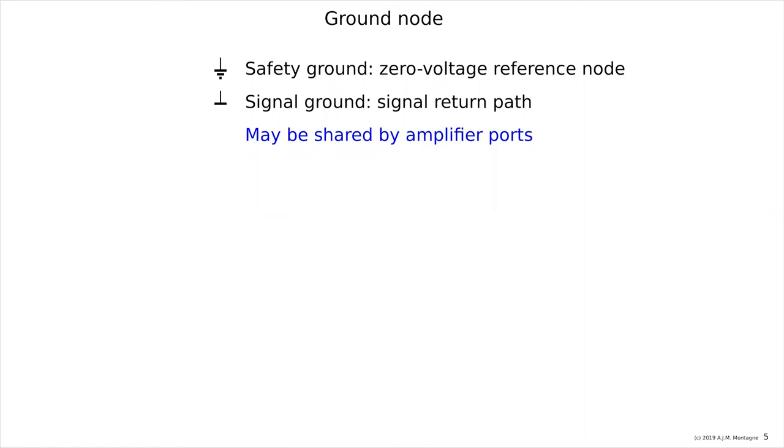So here we have the amplifier with a power supply, but now the input and the output port are both isolated from the power supply. We call it floating. Then we call such an amplifier a differential receiver driver. Both the input receiver and the output driver are isolated from the power supply.